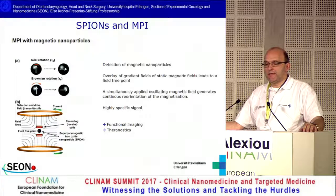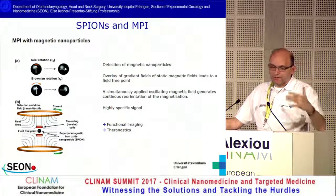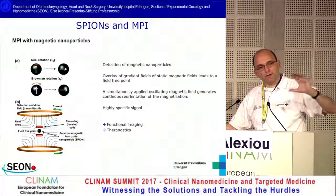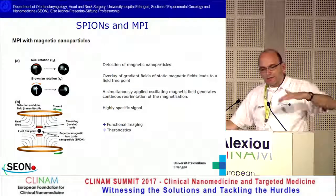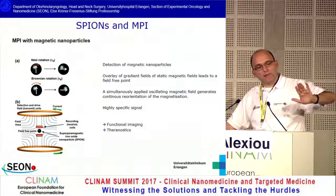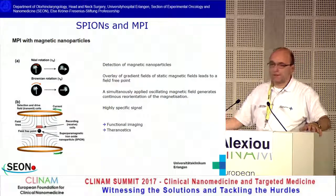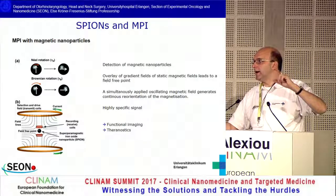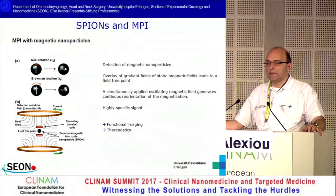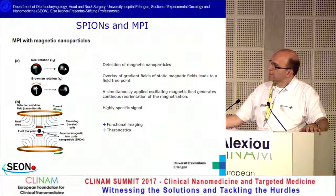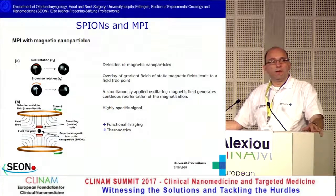Another part is magnetic particle imaging. When you apply particles into an animal or tissue, you generate with several gradients a field-free point. Then you apply an oscillating magnetic field, and if you detect this magnetization, you can get a real signal. The contrast agent is the particle itself. A high-specific signal can be generated with particles located in the field-free point after applying this oscillating magnetic field — magnetic particle imaging is a brand-new technique.